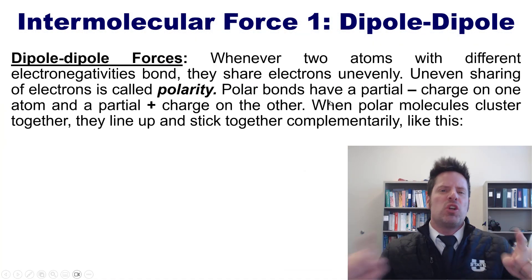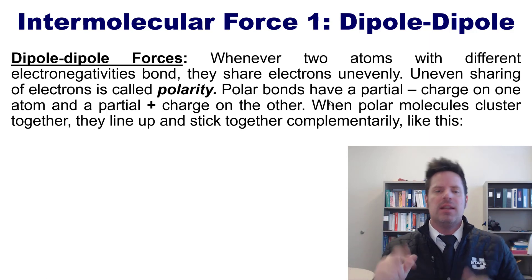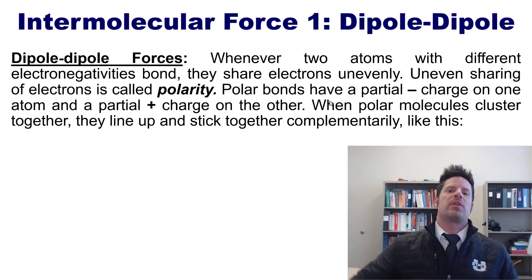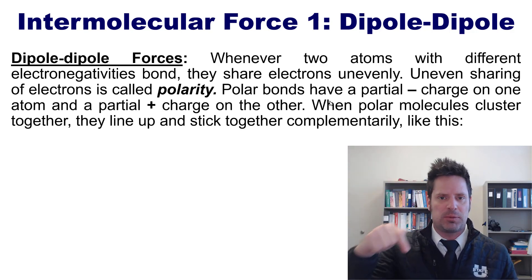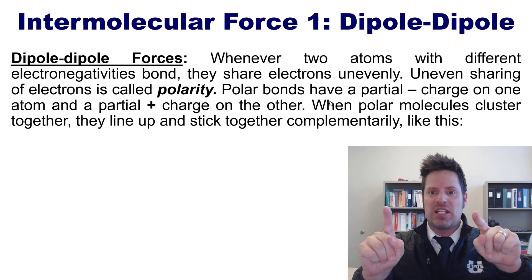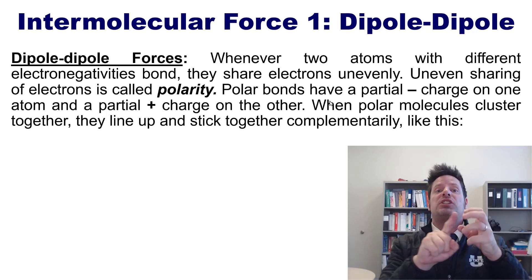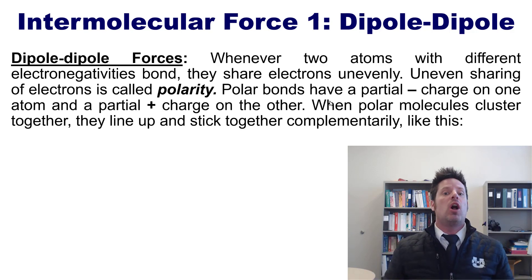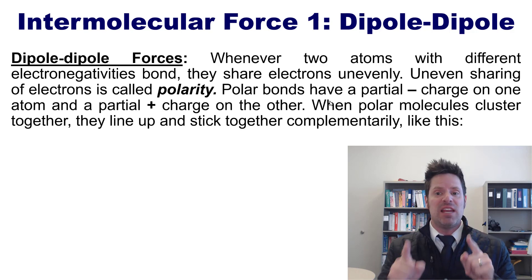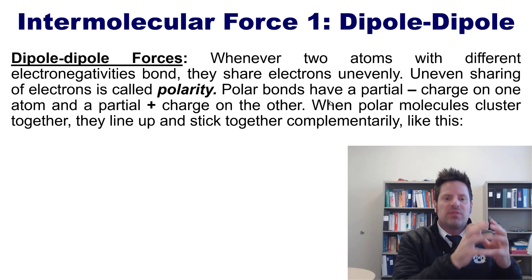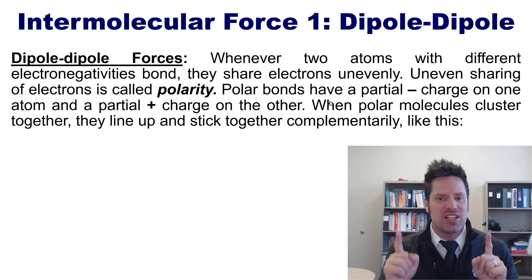Whenever two atoms with different electronegativities bond — and if you want to review electronegativity, which is an atom's thirst for electrons, you're welcome to click a link in the description below — those two atoms will share electrons unevenly. Uneven sharing of electrons is called polarity. Polar bonds share electrons unevenly, so they have a partial minus charge on the more electronegative atom and a partial positive charge on the less electronegative atom.